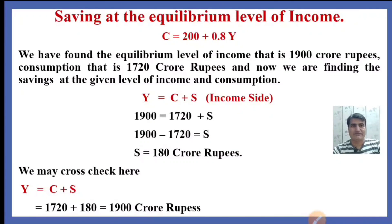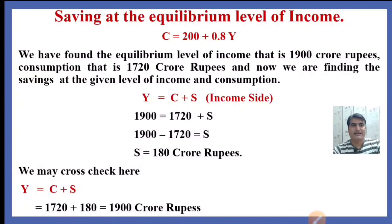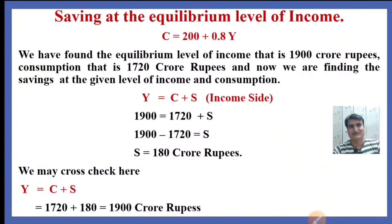We initially calculated the equilibrium level of income, then calculated the consumption at that level of income, and finally calculated the saving at the given level of income. We also cross-checked all these results. I hope this will be helpful for you. If you have an inquiry or comment, please let me know in the comment box. See you soon in the next video. Thanks for watching.